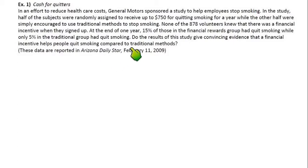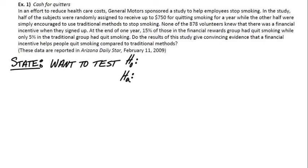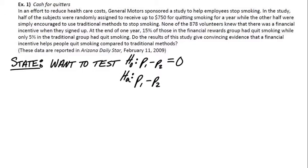This is from the Arizona Daily Star, February 11, 2009. That 'convincing evidence' phrasing is our cue to run a significance test. So let's go ahead and start with the state step. We're going to test two hypotheses: the null and the alternative.